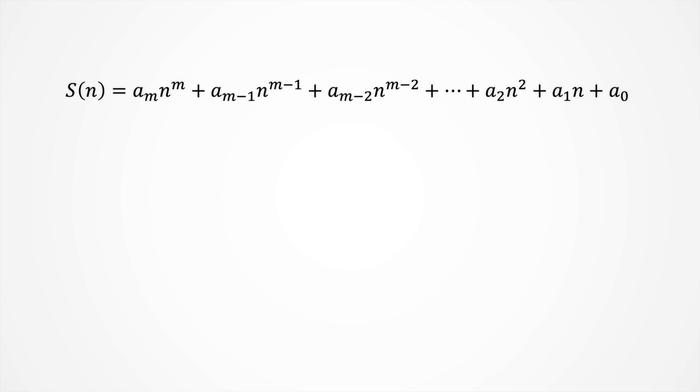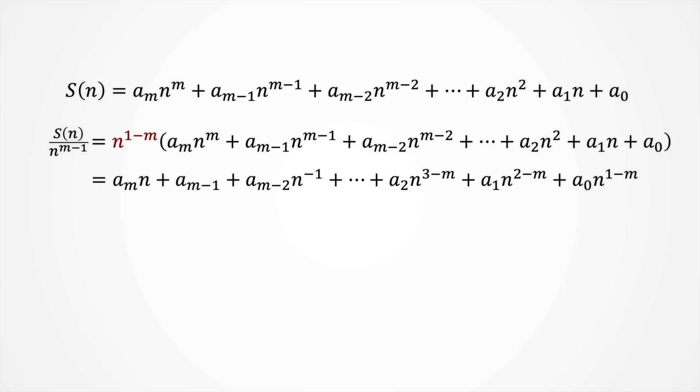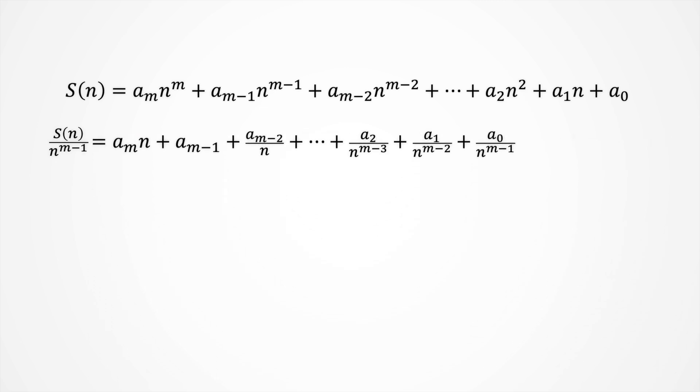For that, let's divide by n to the m-1 in order to reduce the grade of the right side. We end up with new exponents and regrade like that. s of n divided by n to the m-1 is something we can plot. And according to the right hand side, if n is larger, all these terms will vanish. So finally, we end up with a linear function.